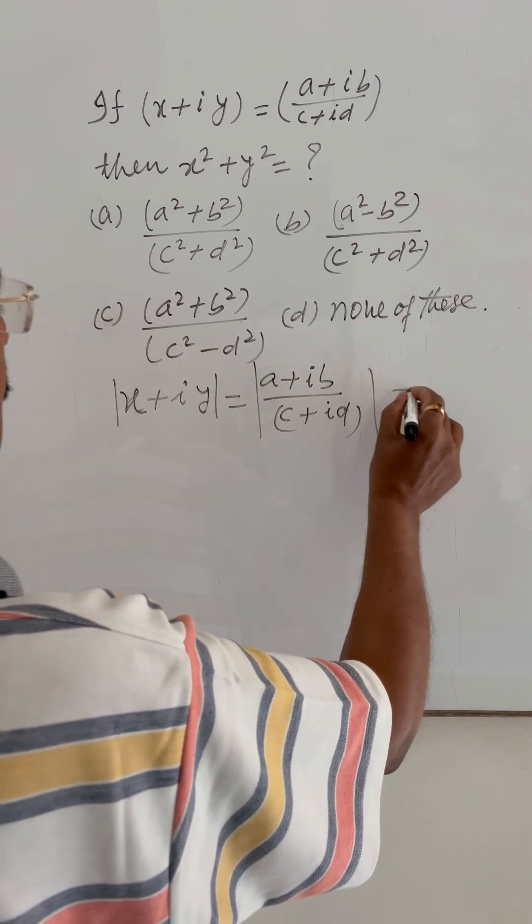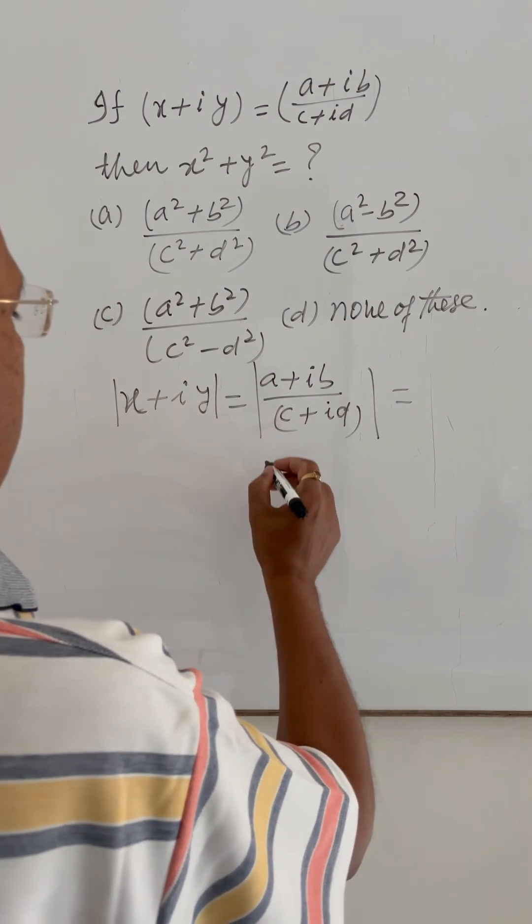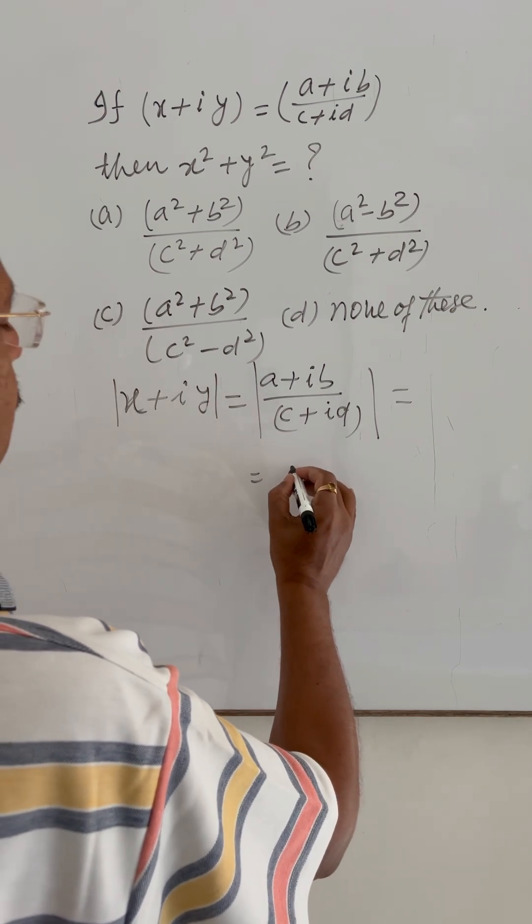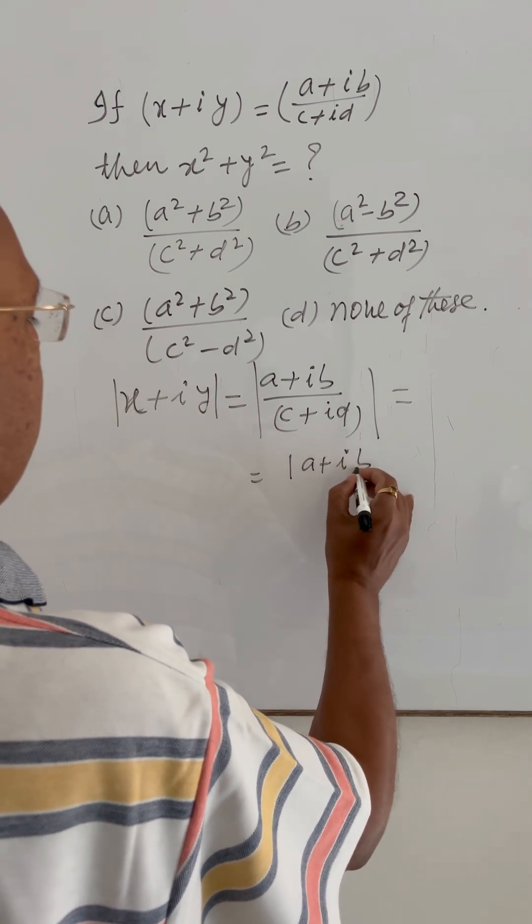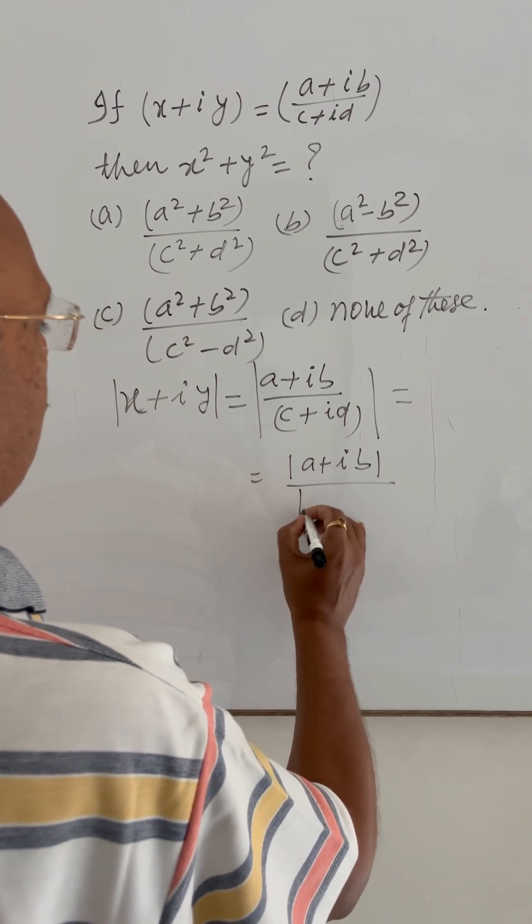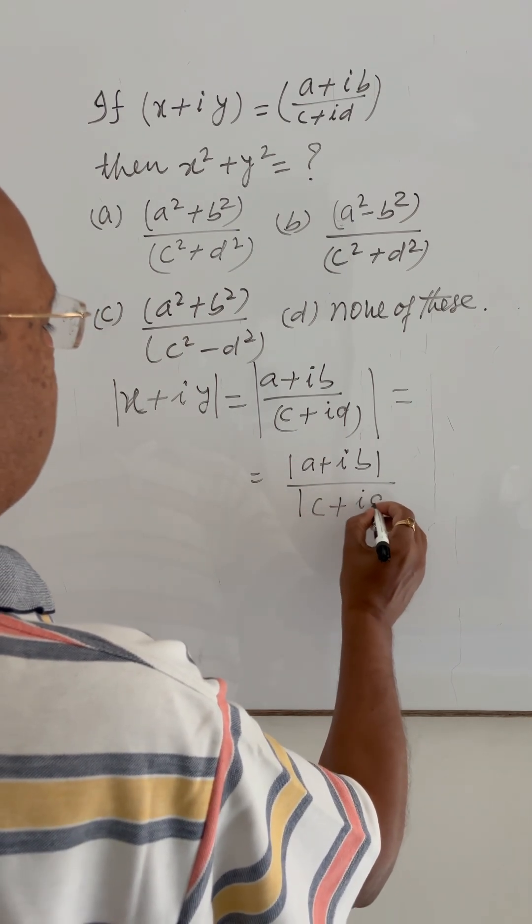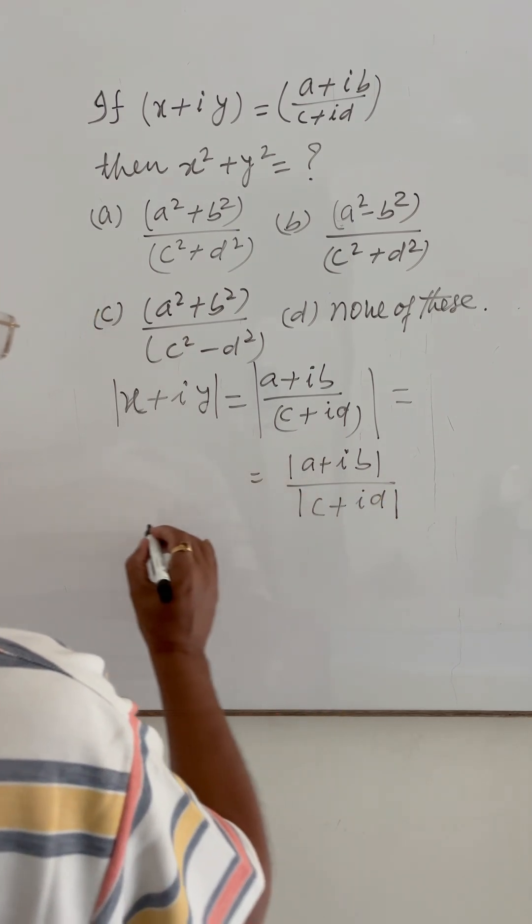This can be written as mod of (a plus ib) upon mod of (c plus id). And therefore,